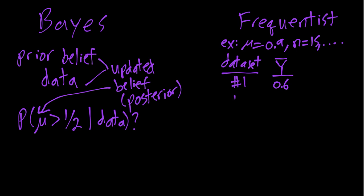As a thought experiment, we could imagine taking another random sample to get data set number two, getting a different sample average because we have different numbers in our data set. Then another data set, maybe another value of the sample average, and so on. The interest is in the properties of estimators, confidence intervals, and other statistics over these repeated samples.